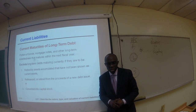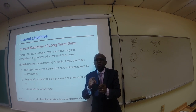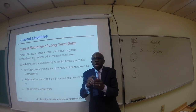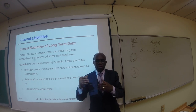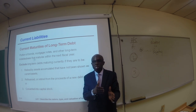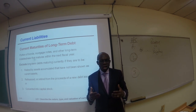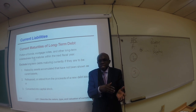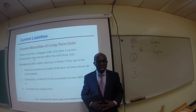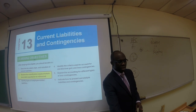Rule two: exclude long-term debt maturing currently if it is to be refinanced or retired from the proceeds of a new debt issue — in other words, if we take on another long-term debt to retire the current portion. Rule three: if the long-term debt maturing currently is converted into capital stock — common stock or preferred stock — then it should not be considered a current liability either.